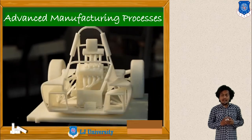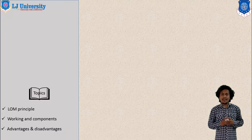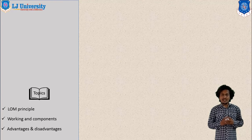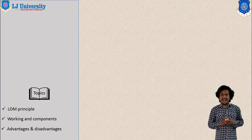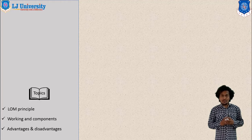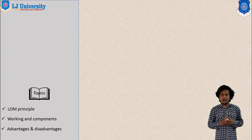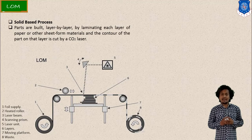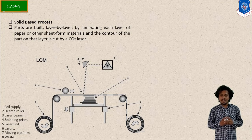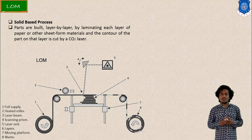In Rapid Prototyping, you can build your prototype at a very fast rate. Speed is a very important criteria, and material wastage is absent or very minimum. The process we are discussing is LOM — that is Laminated Object Manufacturing. This process is under the category of rapid prototyping and is classified as a solid-based process, because the raw material is available in the form of a solid sheet or layer.